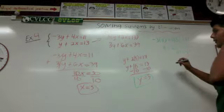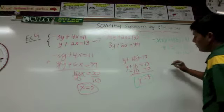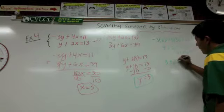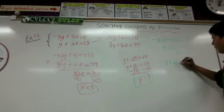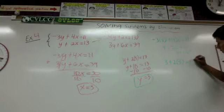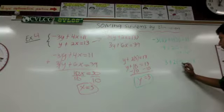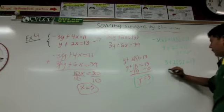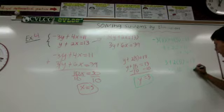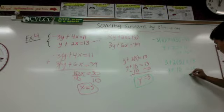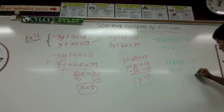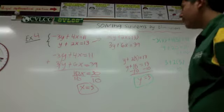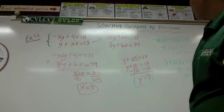Now we're going to do the second equation. We're going to plug in y, which is 3, plus 2 times x, which is 5, equals 13. So we multiply 2 times 5, which equals 10. Then 3 plus 10 equals 13, so 13 equals 13. That is correct, and that was example number 4 of solving systems by elimination.